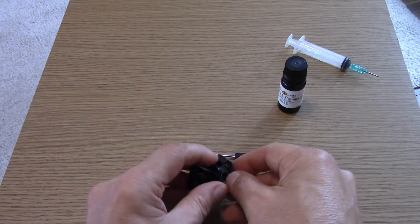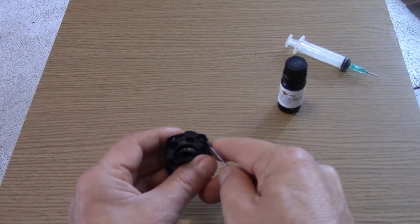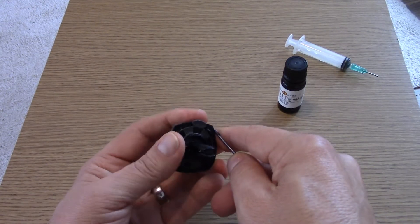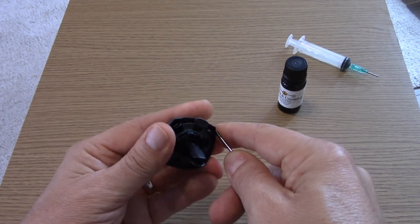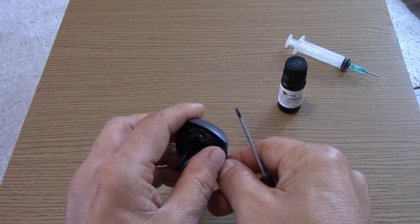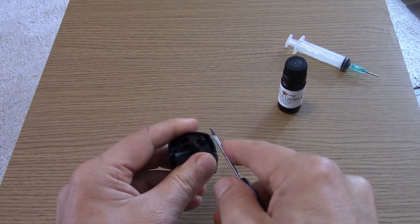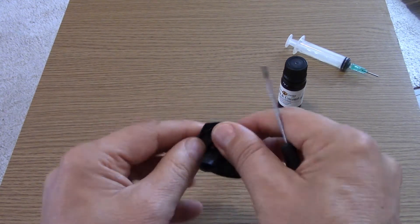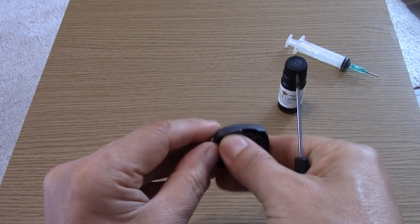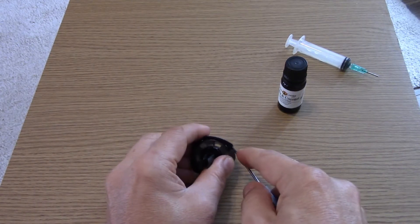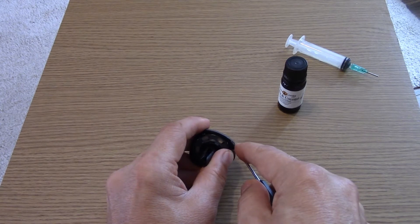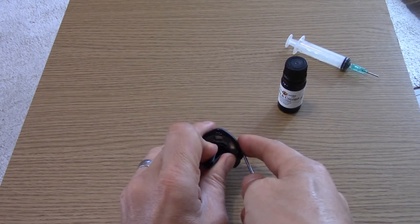But first of all, I'm just going to show you how to dismantle this mechanism because it'll make it easier to clean out any old oil that might still be left in there. Essentially, this gray cover is just pressed onto the outside of this black backing.